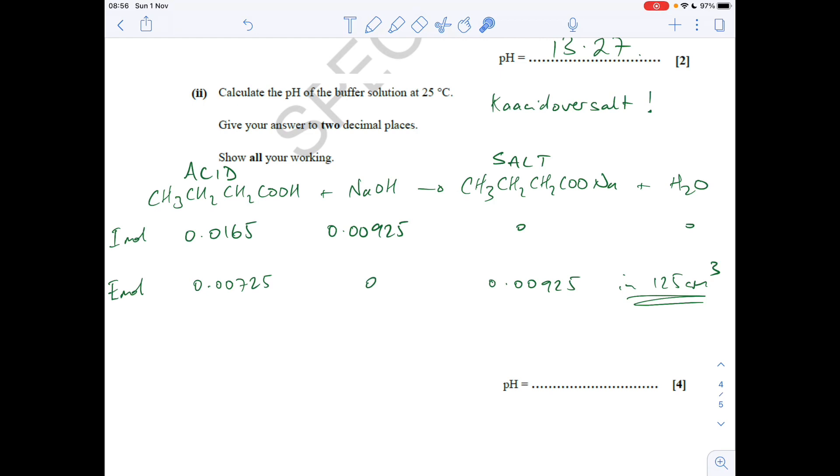Remember they're in 125 cm³, the total volume is 125, so we just need to turn those into concentrations now. Moles over volume, moles over volume. So they come out at: the acid concentration 0.058, salt concentration 0.074. We're then going to put it into acid over salt, so that gives us an H+ concentration of 1.18 times 10 to the minus 5. I'm just going to minus log that to get the pH and I get a pH of 4.93.